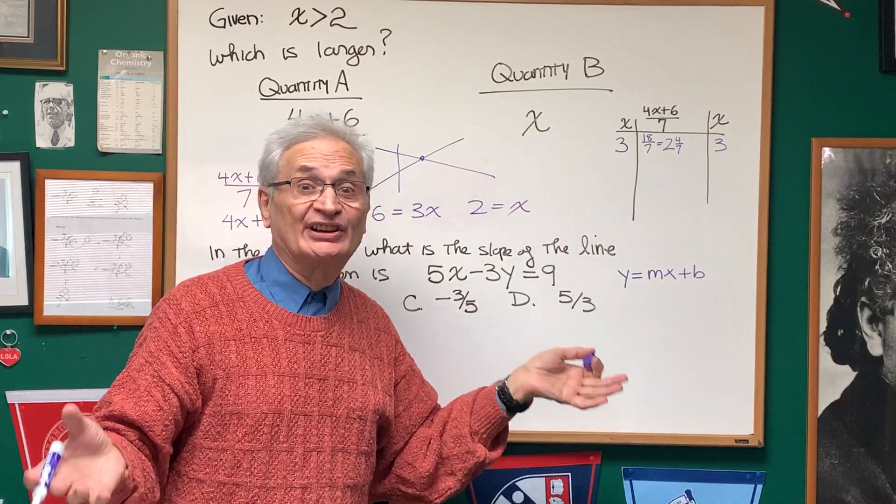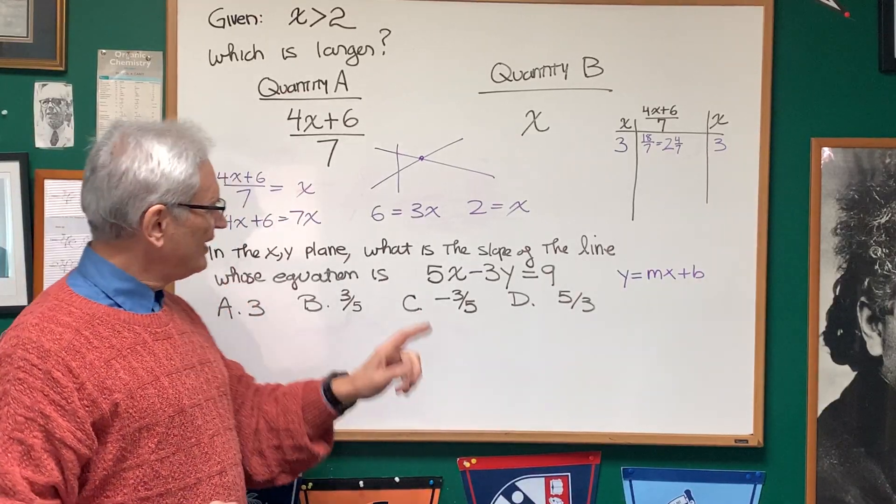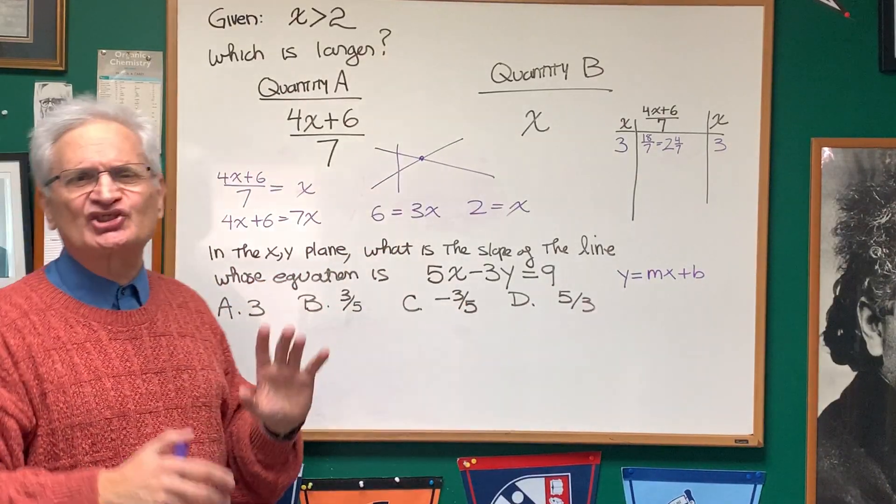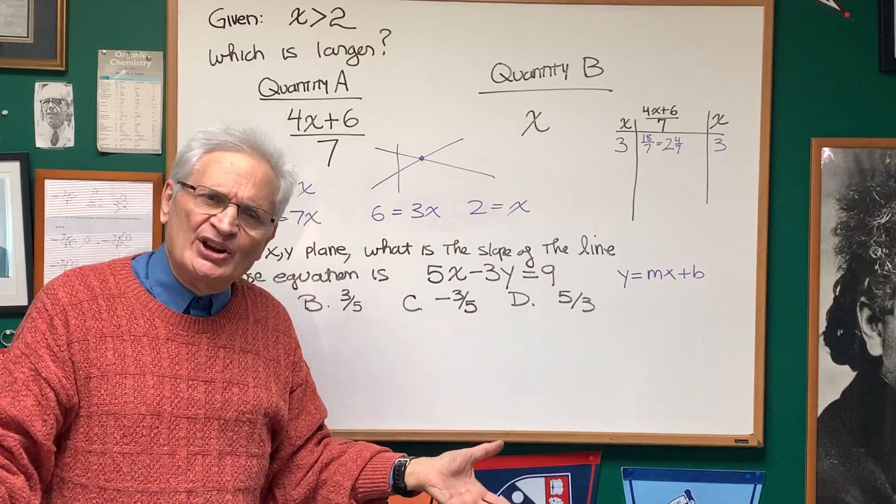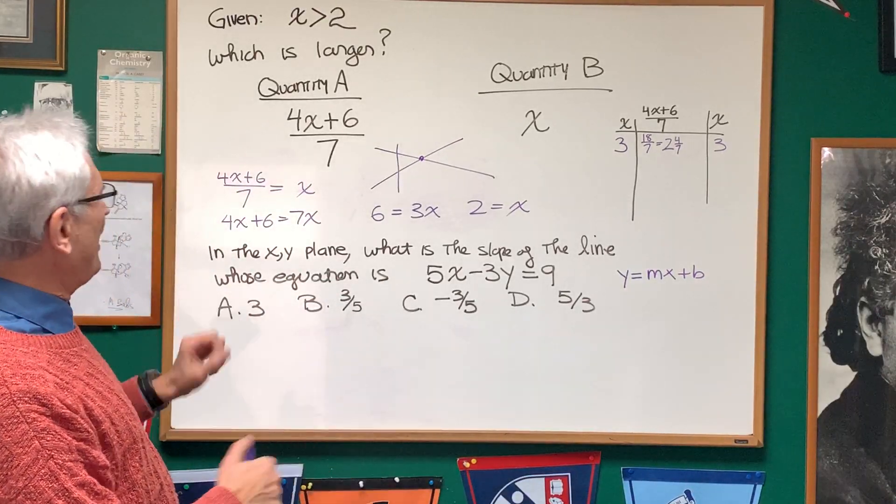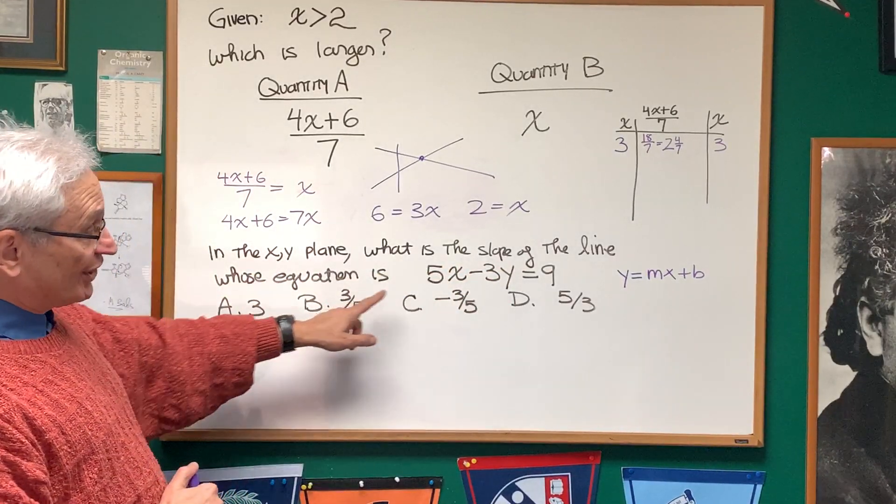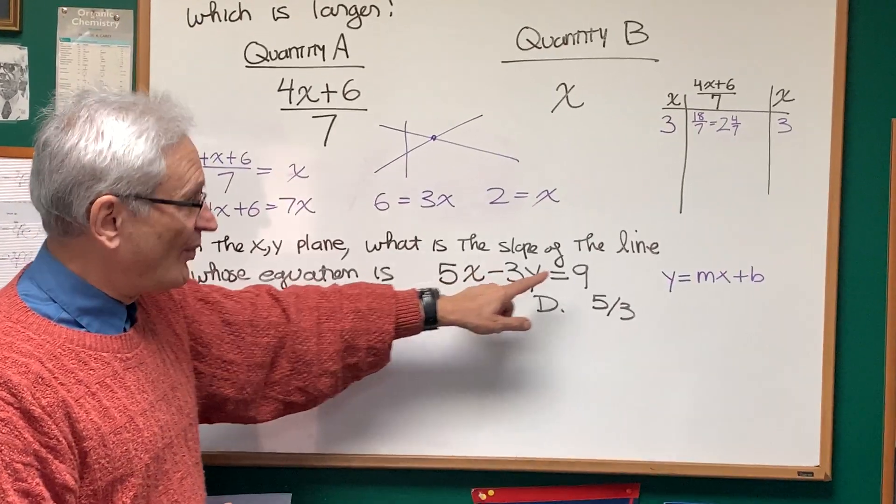Okay, now this is a problem that's related to this, just to review the equation of a line and how to find the slope and y-intercept of a line. In the xy-plane, what is the slope of the line whose equation is 5x minus 3y equals 9?